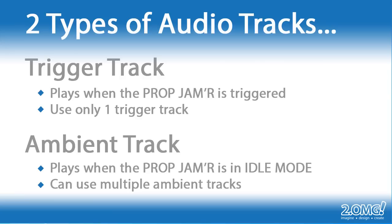The Prop Jammer uses only one trigger track. However, you can use more than one ambient track. If you choose to use multiple ambient tracks, these tracks will play sequentially while the Prop Jammer is waiting for a trigger. This feature allows you to have literally hours of ambient audio. You can also choose not to use an ambient track at all if you just want silence while the unit is waiting for a trigger event.